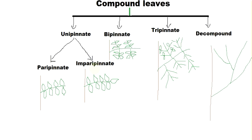In imparipinnate, there is always a terminal leaf at the terminal position of the midrib, so there is always an odd number of leaves. In bipinnate, branches come out from the midrib and leaflets arise from those branches. In tripinnate, there are branches from the midrib, branches from those branches, and leaflets on those. In decompound, this branching continues — branches from branches from branches from the midrib.